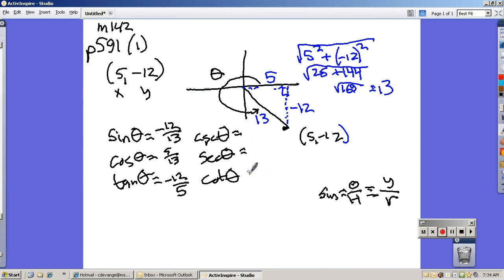And then once you know these, cosecant, secant, and cotangent are pretty straightforward. Cosecant is the reciprocal of sine, so flip it over: -13/12. Secant, flip over cosine: 13/5. And cotangent is reciprocal tangent: -5/12. All right, I hope that helps.